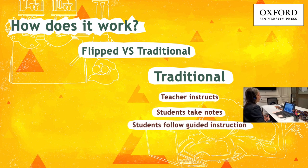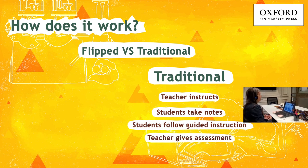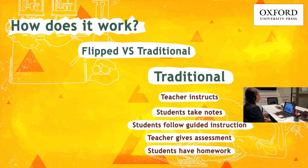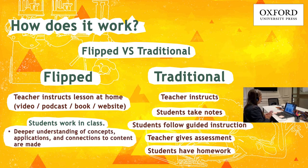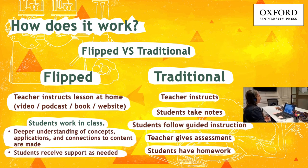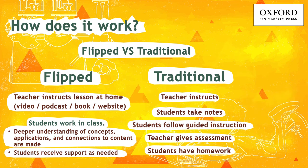How does a flipped classroom work? In the traditional classroom, the teacher instructs, students take notes, the teacher gives an assessment, and students have homework to complete. In flipped learning, the teacher instructs lessons at home, students work in class, develop a deeper understanding of concepts, and receive support from the teacher as they go along. The greatest advantage is that students get individual attention, are taken through their struggles one by one, work in groups, and maximize peer learning opportunities.